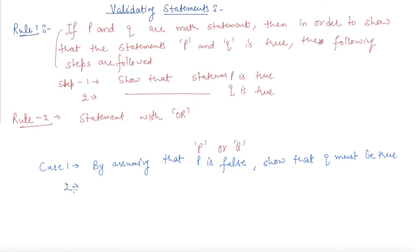Case two: by assuming Q is false, show that P must be true. So, this is about the OR statement.